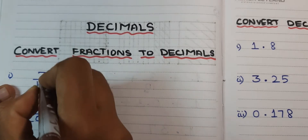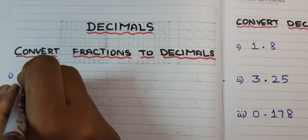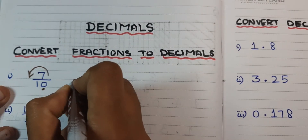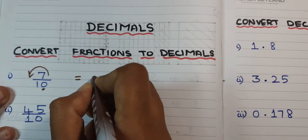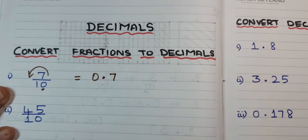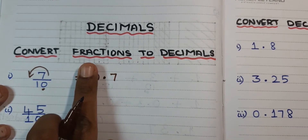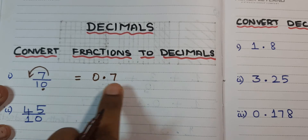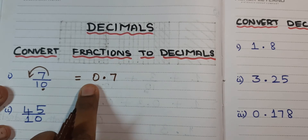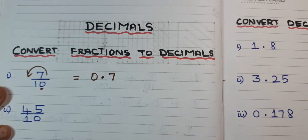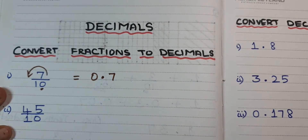So the decimal point goes here, and the answer is 0.7. You can simply write it as 0.7 — the trailing zero has no value. For clarity I am writing it as 0.7.